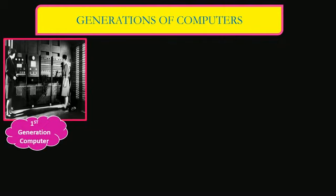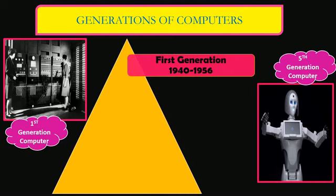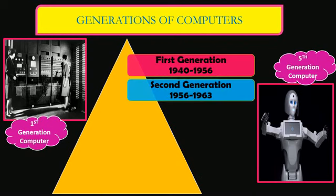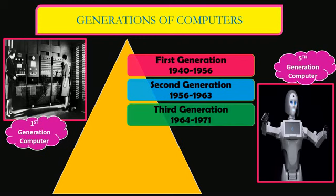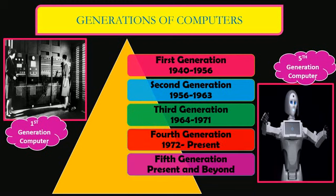Now let us understand what these generations are. Earlier the computers were very big in size — of the size of a room — and now the computers are very compact and even in the form of robots. The evolution from huge computers to compact computers has taken a lot of time, and this time has been divided into five parts called generations. The first generation began in 1940 to 1956, the second from 1956 to 1963, the third from 1964 to 1971, the fourth from 1972 till present, and the fifth generation is present and beyond.